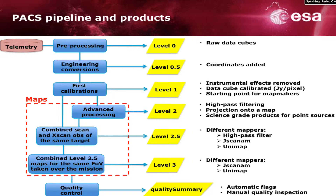Here is a flowchart of the PACS standard pipeline, together with the products that you can retrieve from the Herschel Science Archive within the observational context. Lower-level products from Level 0 to Level 1 are data cubes, where all the timelines for each pixel of the detectors are stored.